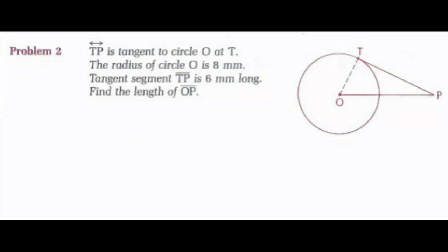Problem 2: TP is tangent to circle O at T. The radius of circle O is 8 millimeters and tangent segment TP is 6 millimeters long. Find the length of OP. Drawing radius OT of length 8, since the radius is perpendicular to the tangent at the point of contact, triangle OTP is a right triangle. Using the Pythagorean theorem — this is the triple 6, 8, 10 — so OP is 10 millimeters.